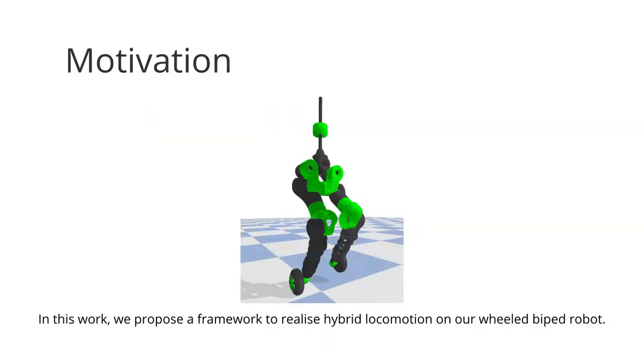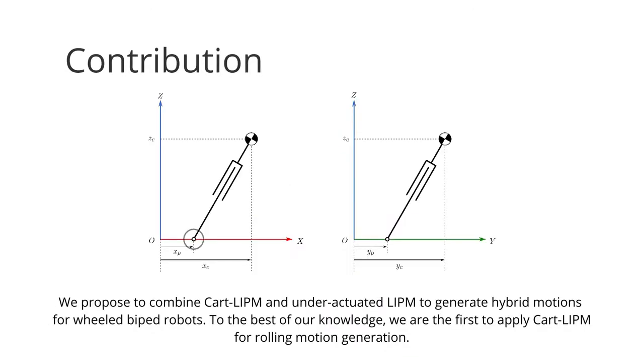In this work, we propose a framework to realize hybrid locomotion on our wheeled biped robot. We combine cart linear inverted pendulum and under-actuated linear inverted pendulum to generate hybrid motions for wheeled biped robots. To the best of our knowledge, we are the first to apply the cart LIP model for rolling motion generation.